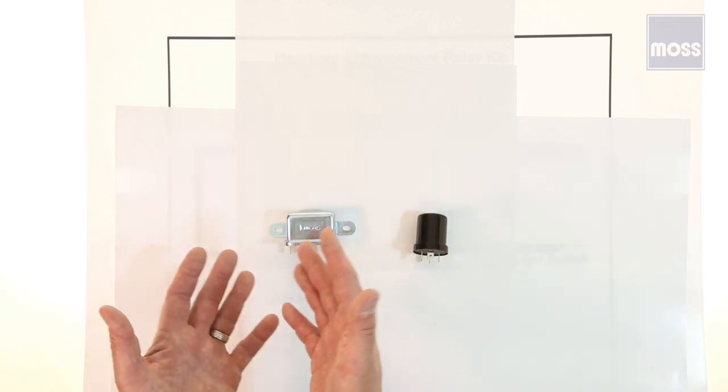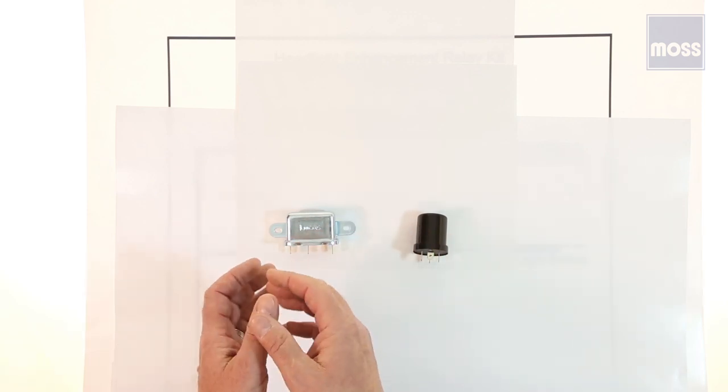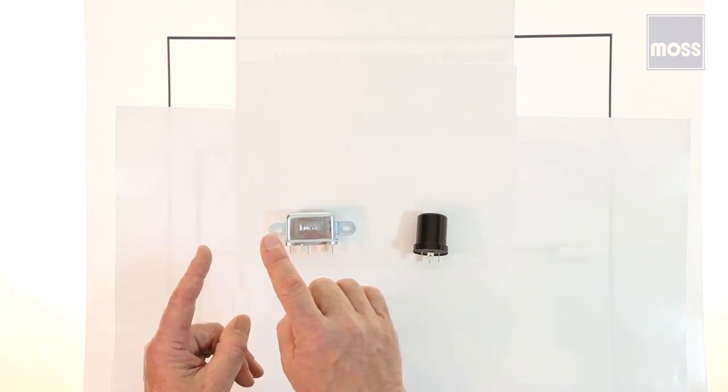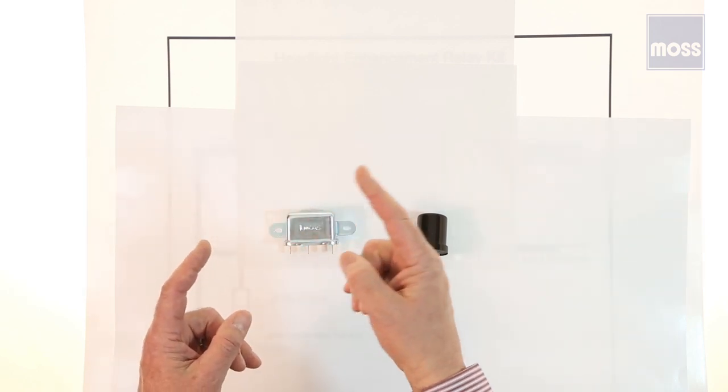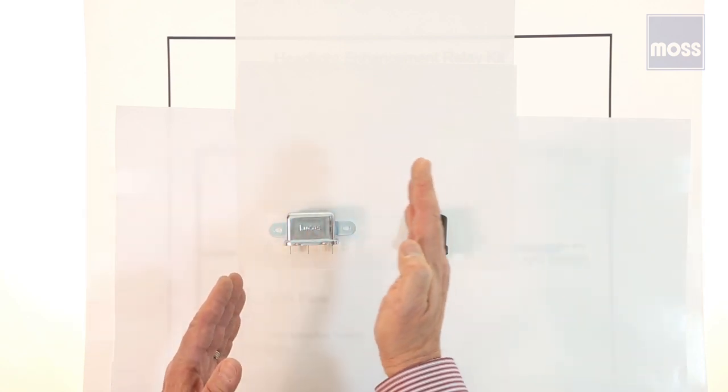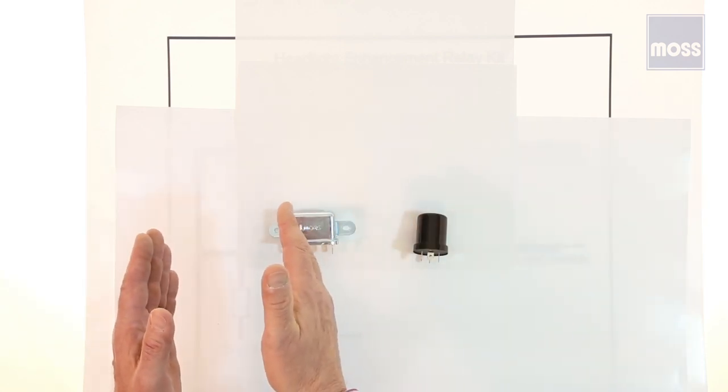Most of us already know that toasters draw a good deal of current. However, in this technician's experience, most headlights draw between 4 and 4.5 amps each. So a pair of them is going to draw 8 to 9 amps. That's more than our little toaster draws.